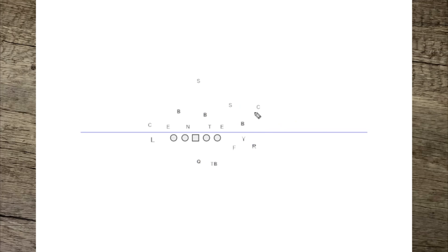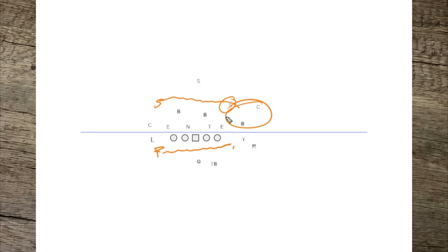There are about a million different bunch plays you could draw up — they create leverage, mismatches, and personnel issues in the run game too. When teams go to bunch, they're trying to create space, create leverage, create confusion, and create mismatches. You can do it in the pass game or the run game — that's what the bunch package is all about. You can use a set bunch formation or motion a player into the mix to throw defenders into three-on-three. By using motion, formation, and the bunch package, you create mismatches, space, and leverage.